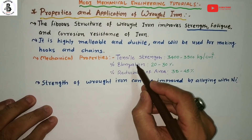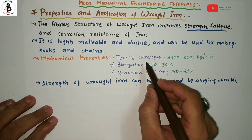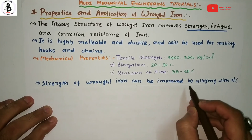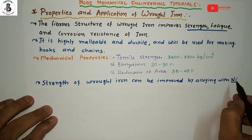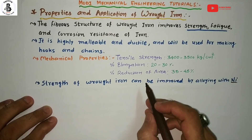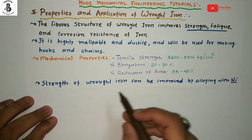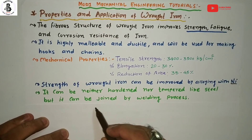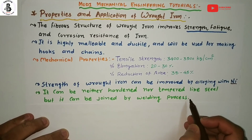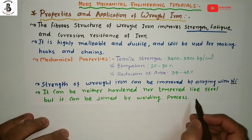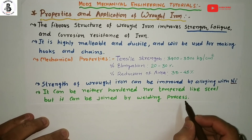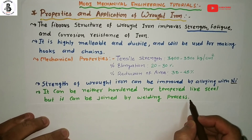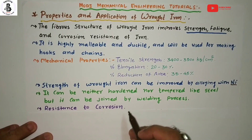If you want to increase these mechanical properties, the addition of alloying elements can extend them up to certain limits. The strength of wrought irons can be improved by alloying with nickel in proper proportions. It cannot be hardened or tempered like steel, but it can be joined by the welding process. Wrought iron has good weldability, and also good resistance to corrosion — the slag fibers act as rust-resistant material.